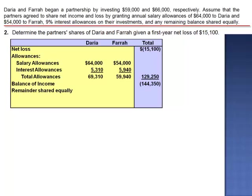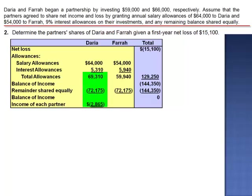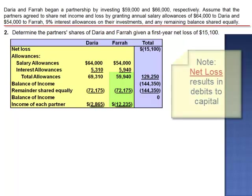This amount is shared equally. Half of negative $144,350 is negative $72,175. Once the remainder has been shared equally, there is no balance of income. Daria's share of income is a negative $2,865: $69,310 minus $72,175 is a loss of $2,865. When we combine $59,940 and negative $72,175, Farah is claiming $12,235 of the loss.